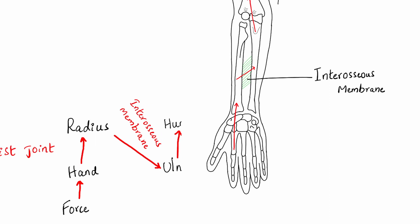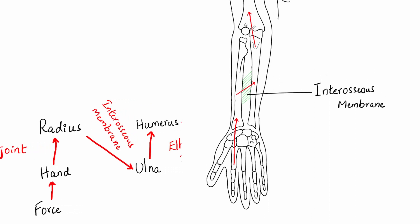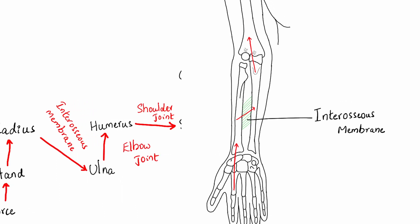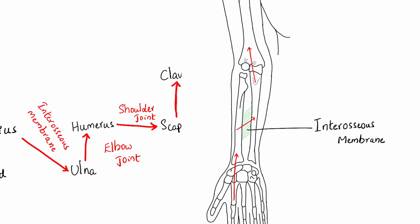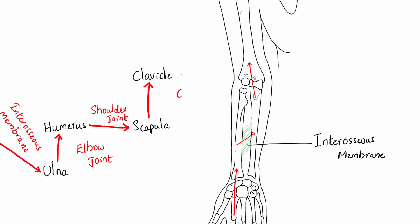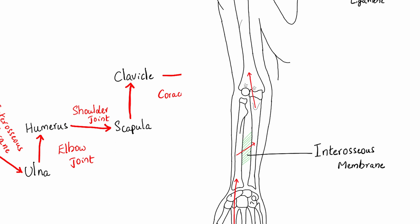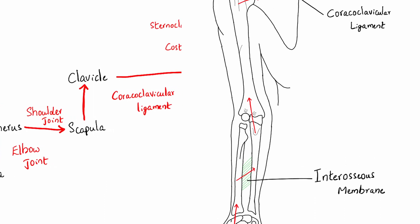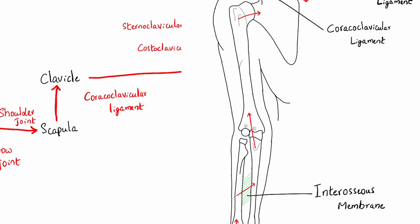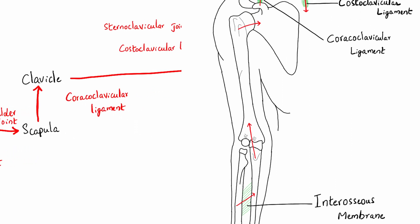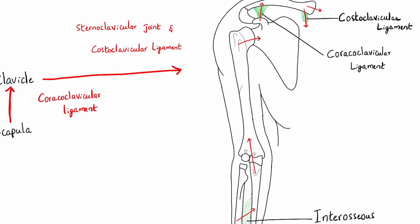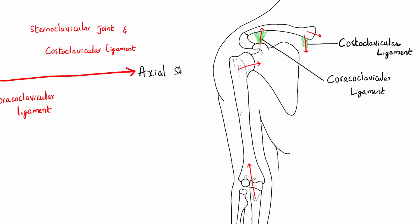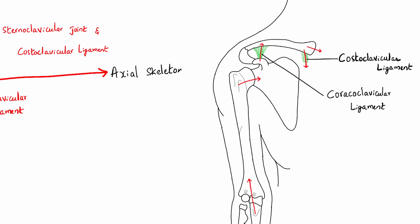The force exerted on the hand passes through the wrist joint to the radius, then through the interosseous membrane to the ulna, through the elbow joint to the humerus, through the shoulder joint to the scapula, through the coracoclavicular ligament to the clavicle, and finally through the sternoclavicular and costoclavicular ligaments to the axial skeleton. This is how forces are transmitted from distal to proximal in the upper limb.